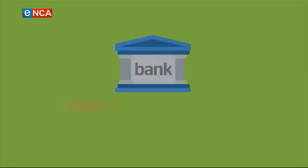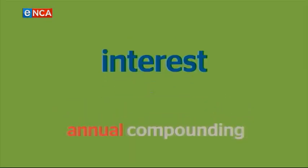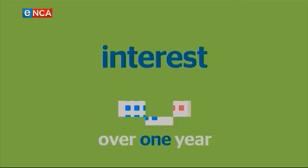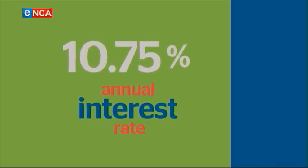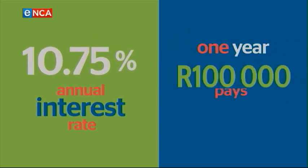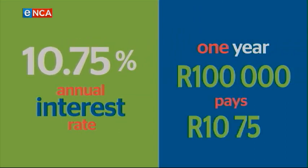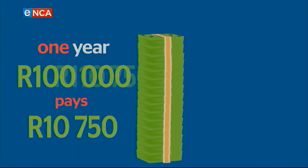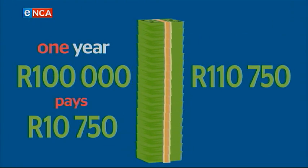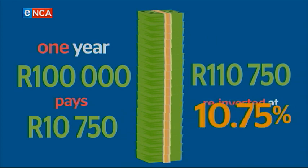The interest paid on maturity is linked as much to the length of the investment as the interest rate paid by the bank. The annual compounding interest rate is the effective interest rate over one year. The 10.75% annual interest rate means in one year, a R100,000 investment would pay R10,750. But if you reinvested it, the balance grows to R110,750, and the 10.75% is applied to this new higher balance. This results in more interest being earned in the second year of R11,905.